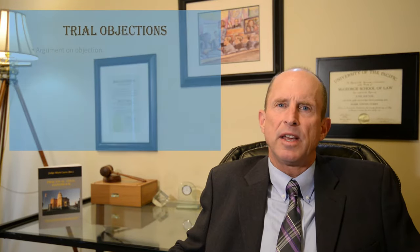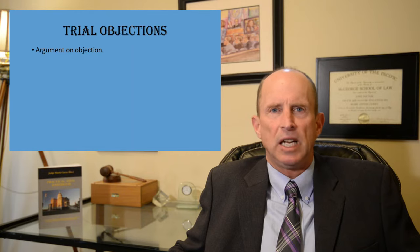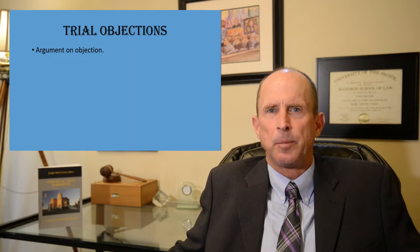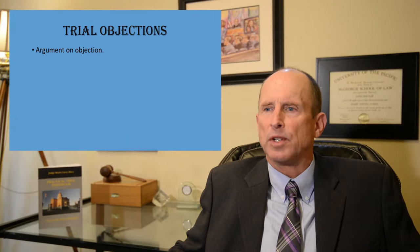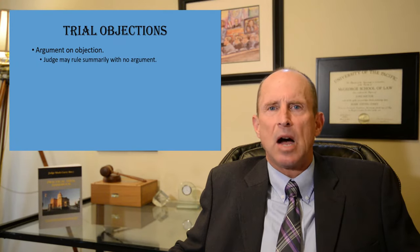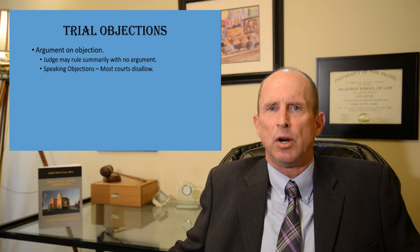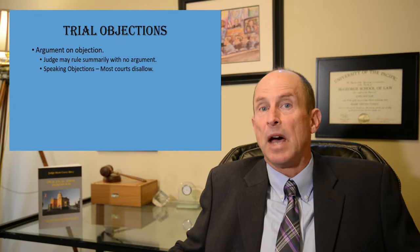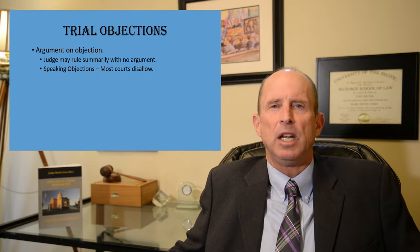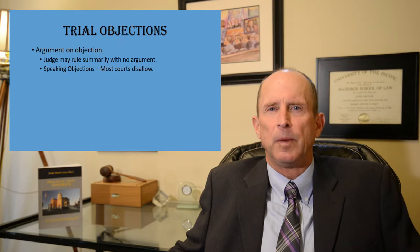When you make an objection, a couple of things can happen. The judge may summarily overrule it with no argument, especially for minor issues like a leading question. Some judges disallow what are called speaking objections — where attorneys want to argue the case in front of the jury. I was one of those judges; I did not permit speaking objections. So for example on a hearsay objection, the moving party says 'objection, your honor, hearsay,' and the opposing party might say 'it falls within the exception of an excited utterance,' and the judge rules.